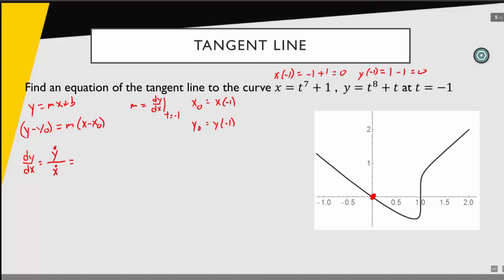We can calculate those values here. If we look at y, the derivative of that is going to be 8t to the 7th plus 1. Then when we look at x, the derivative of that is going to be 7t to the 6th.